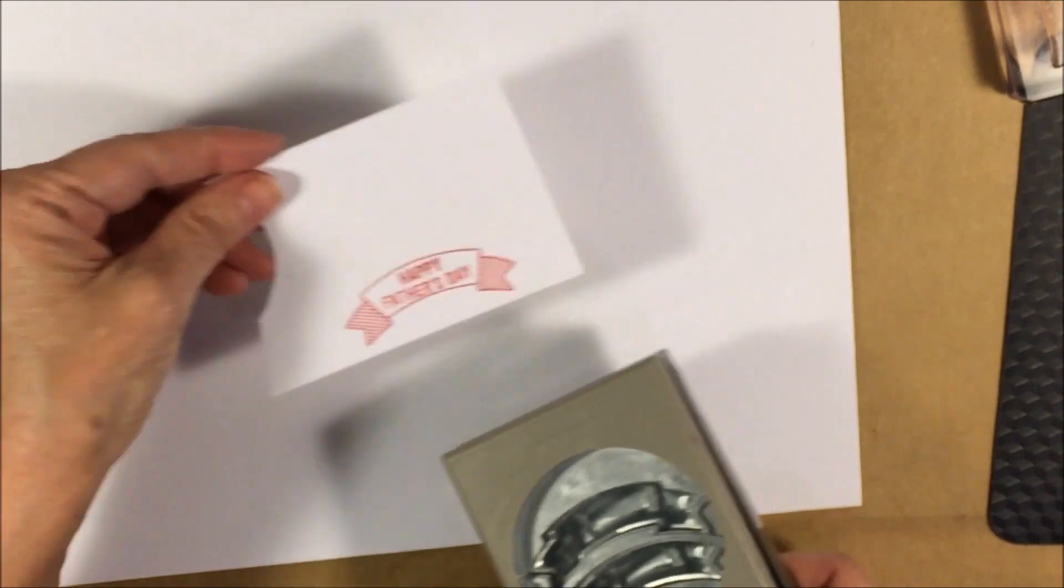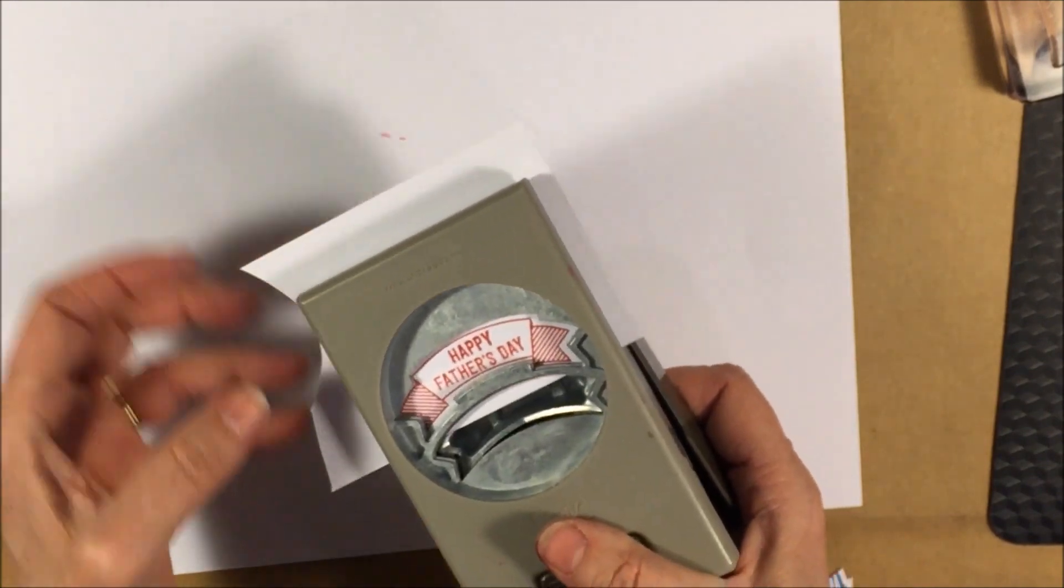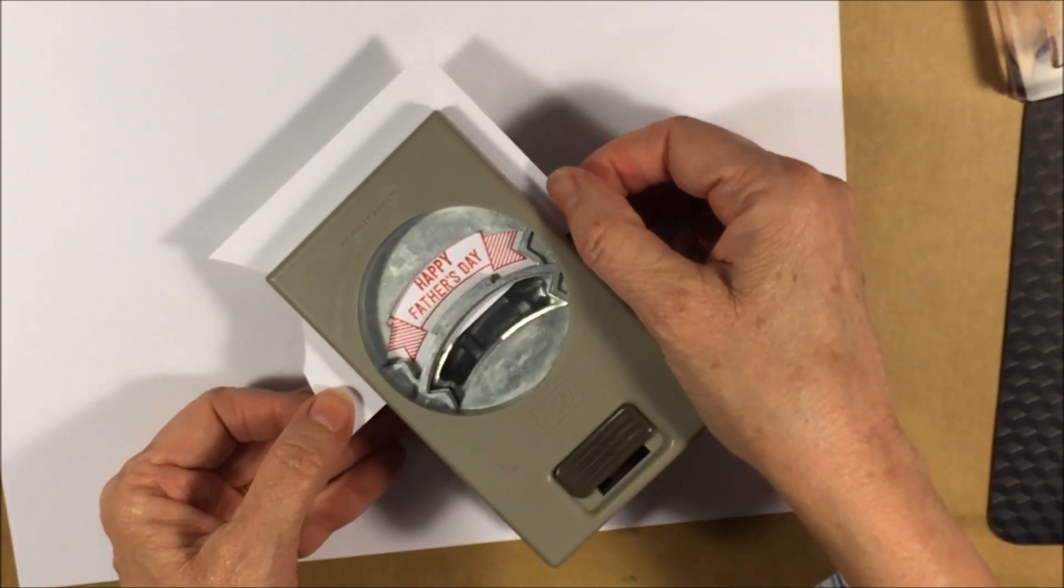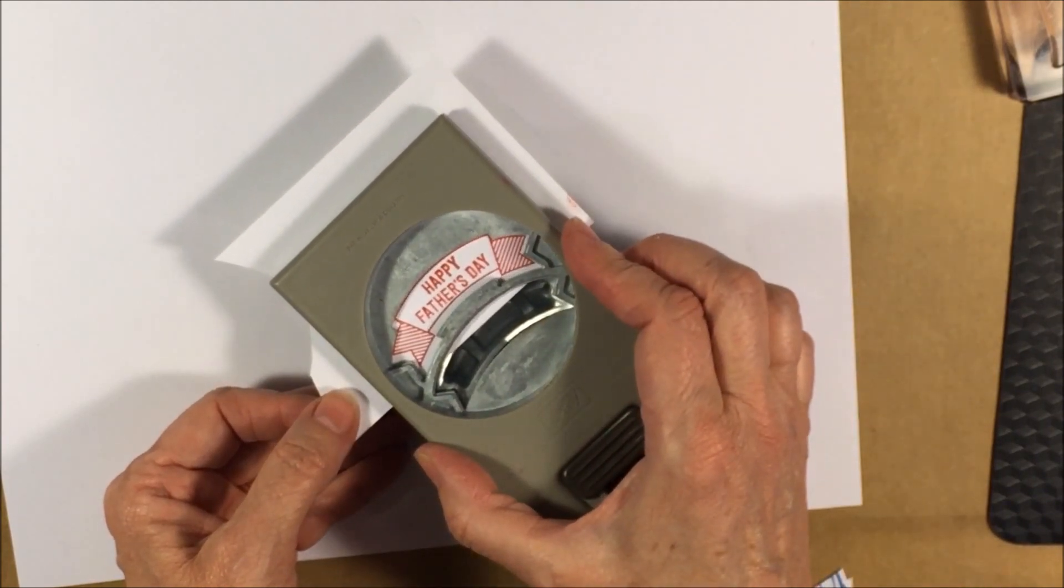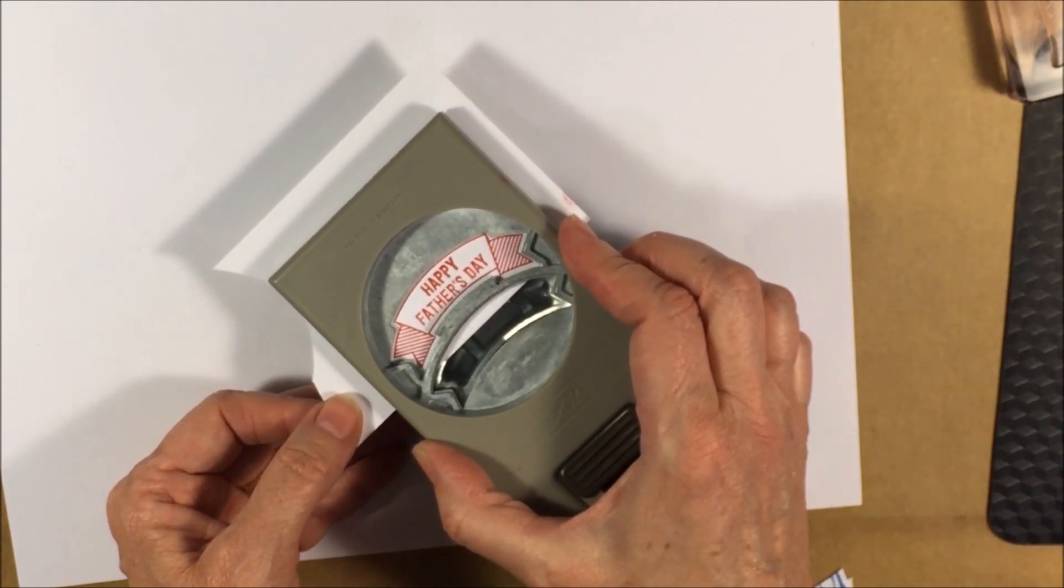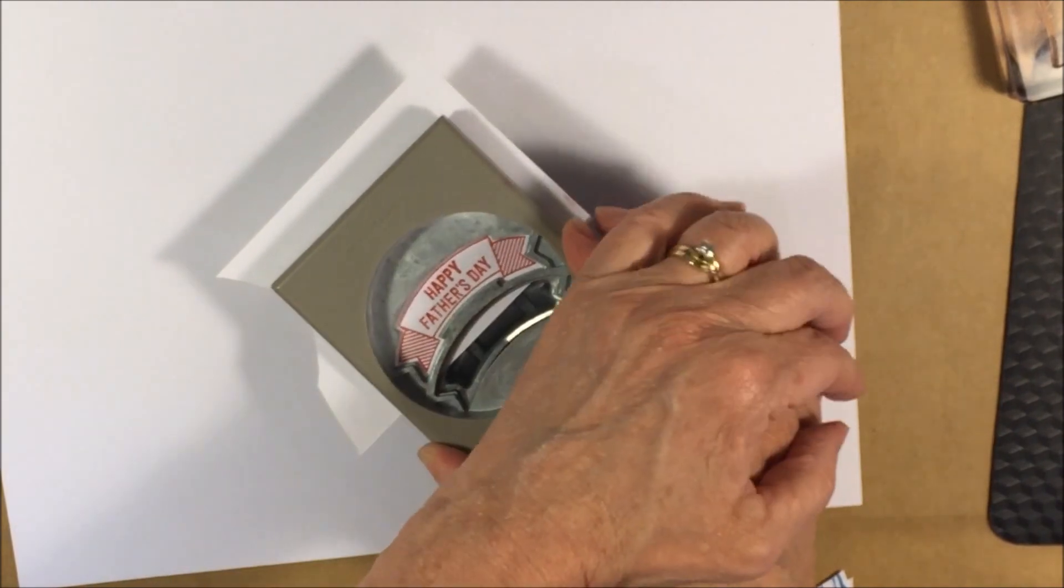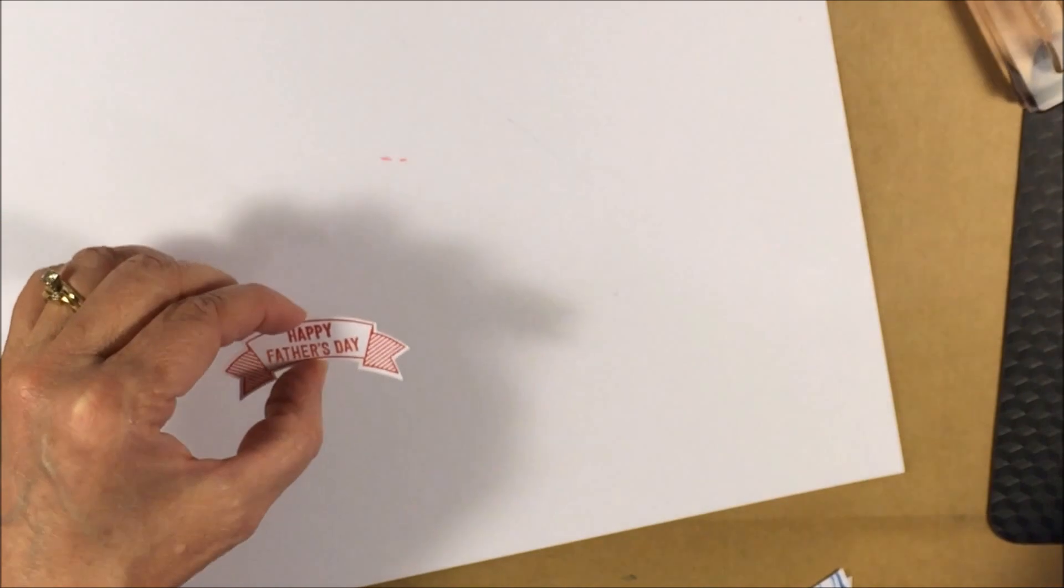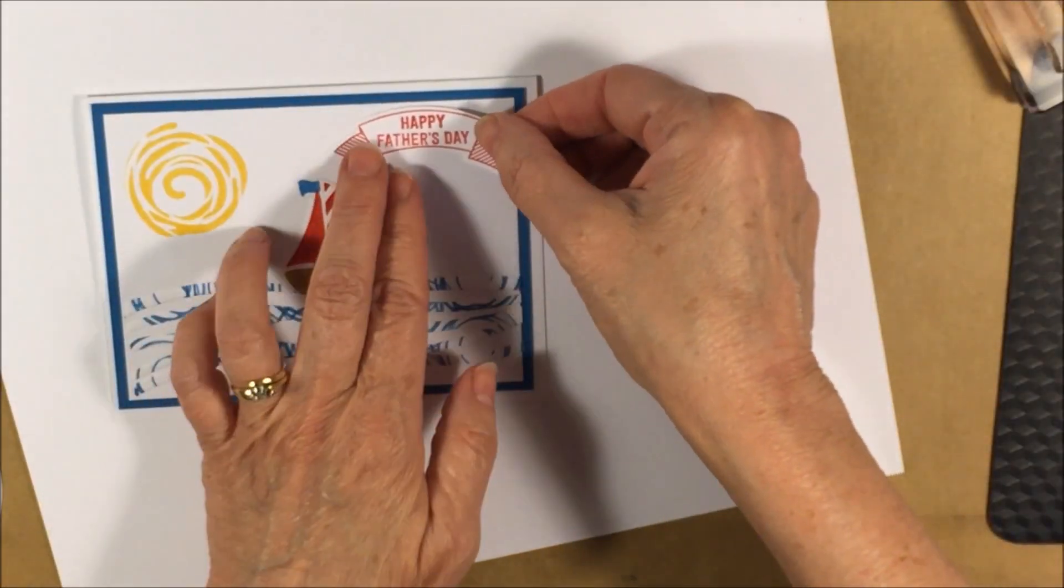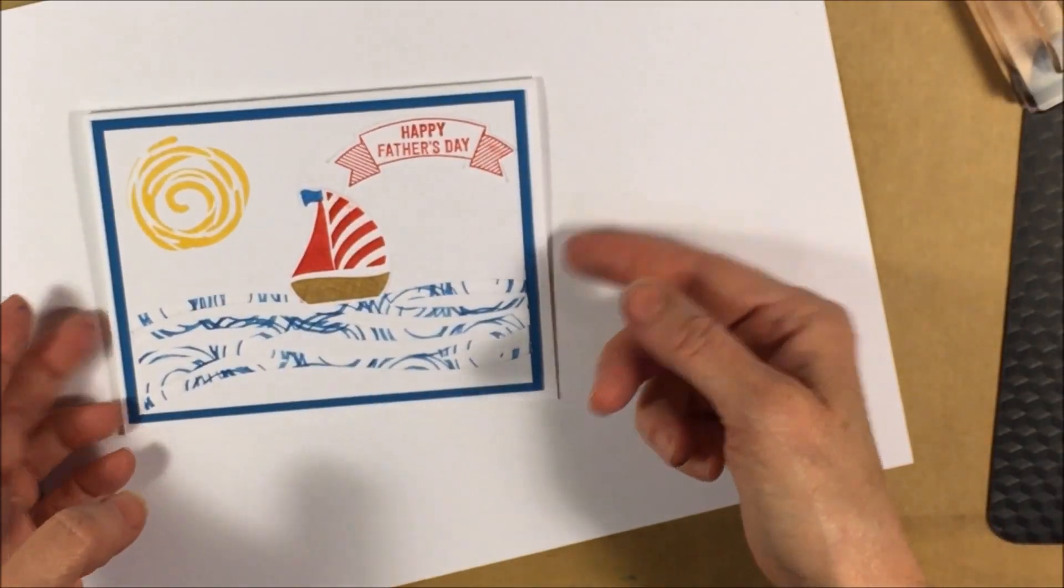And then the fun part, the punch. I love these punches. Just line it in there. You can push it down a little bit to hold it to make sure it's where you want it. Position it. Give it a good push. And there you have it. There's your pretty little punch. You could put it up on dimensionals if you like.